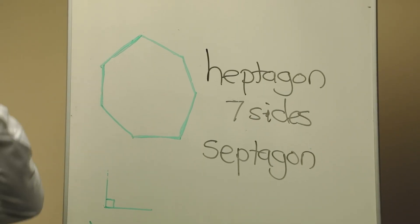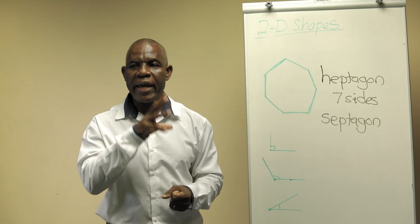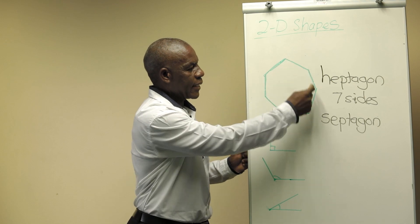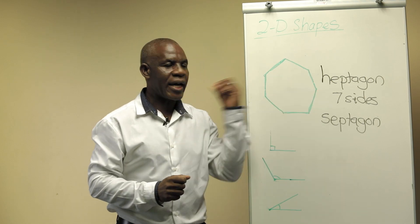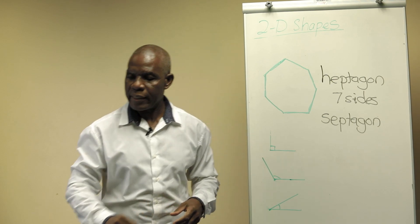Today, I want us to describe these 2D shapes based on the size of their angles, the inside angles. Before we do that, I want to introduce you to these three types of spatial angles.